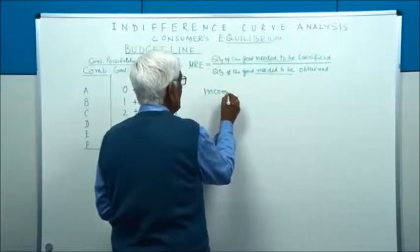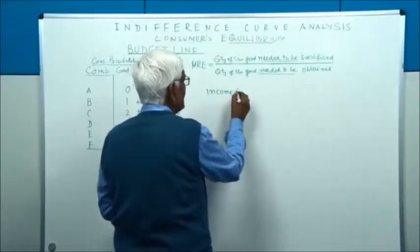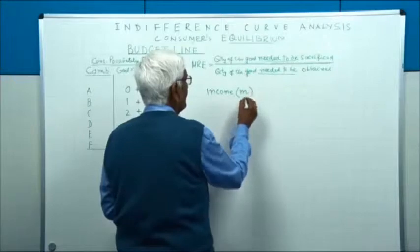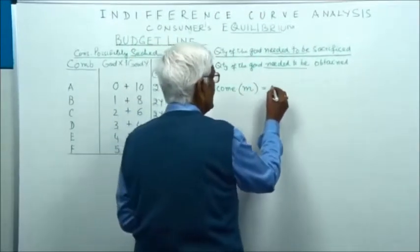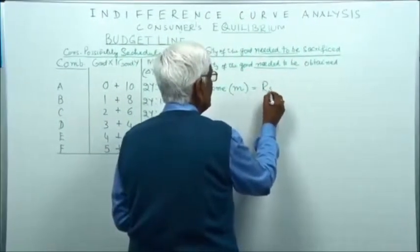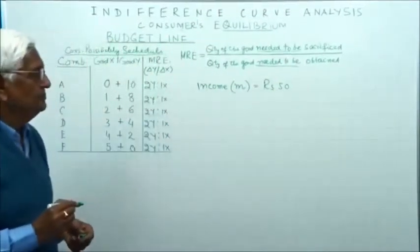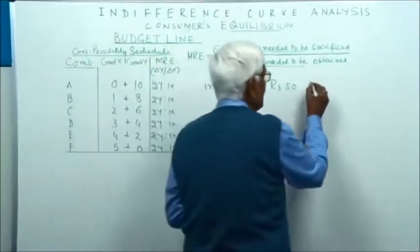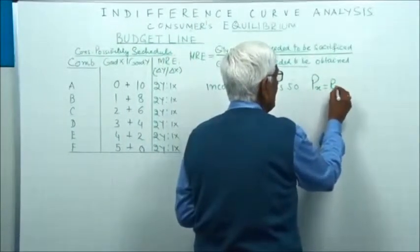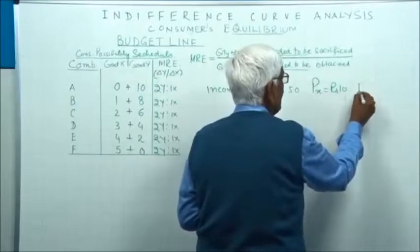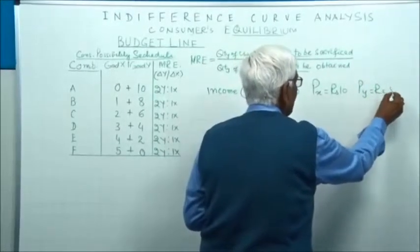These combinations are based on income. The symbol used for income is M. Income is taken as equal to rupees 50, and we have assumed the price of X is rupees 10 and the price of Y is rupees 5.